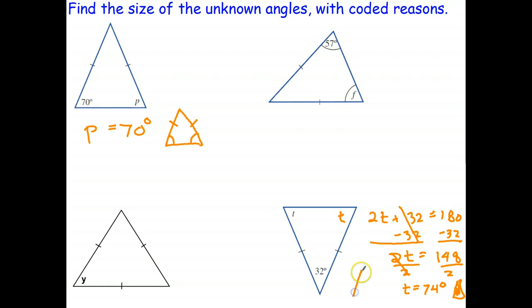And the reason is base angles in an isosceles triangle are equal. I'll do it over here. So draw the triangle, draw the isosceles triangle. Base angles are equal. Okay, stop the video and try the next two problems, please.